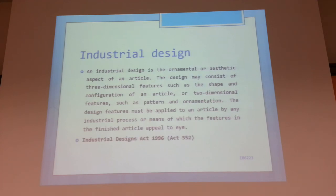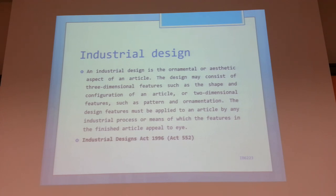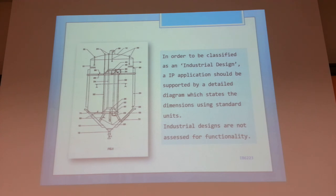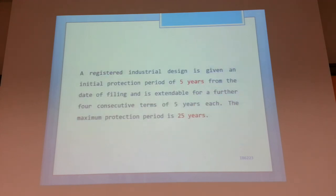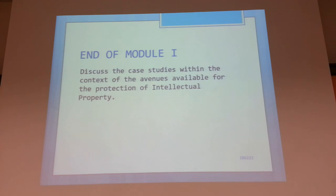Industrial design is also relatively easy to file. The trademark will be the name of a device; the industrial design will be a blueprint of that device — you file using the blueprint. There is no due diligence besides checking that no other similar industrial design exists. Industrial design has protection for five years, and you can extend it — every five years you have to pay, like a license — and you get up to 25 years protection. So that's the end of this first module; if you have any questions, you can ask now.